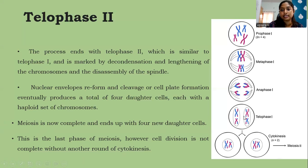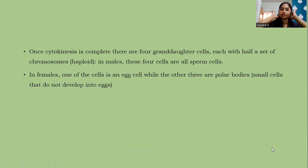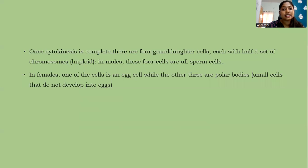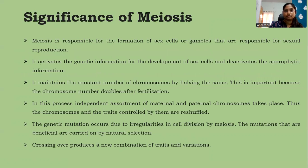After cytokinesis, four granddaughter cells are formed, each with half a set of chromosomes — haploid. In males, all four cells become sperm cells, whereas in females, one cell is the egg cell while the other three form polar bodies. Polar bodies are egg-like cells but very small and do not develop into eggs. The significance of meiosis is that it is responsible for the formation of gametes and hence sexual reproduction; it activates genetic information for the development of sex cells and maintains the constant number of chromosomes by halving them — which is important because chromosome numbers double after fertilization.